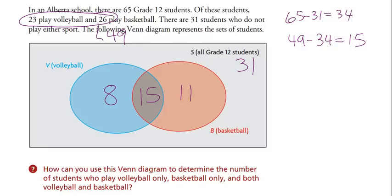We've accounted for all 65 people. People can only be in one place — just basketball, just volleyball, both, or neither. There are four places in the diagram: neither sport (31), only volleyball, only basketball, and both. We figure out the 'both' by noting we had 49 people to place but only 34 spaces, so 49 minus 34 gives 15 who play both. Then 23 minus 15 is 8 only volleyball, and 26 minus 15 is 11 only basketball.